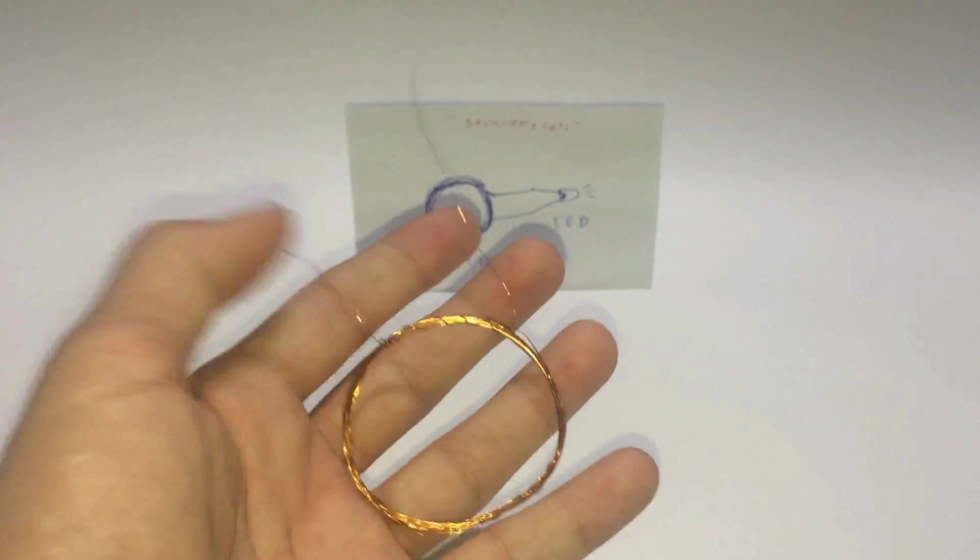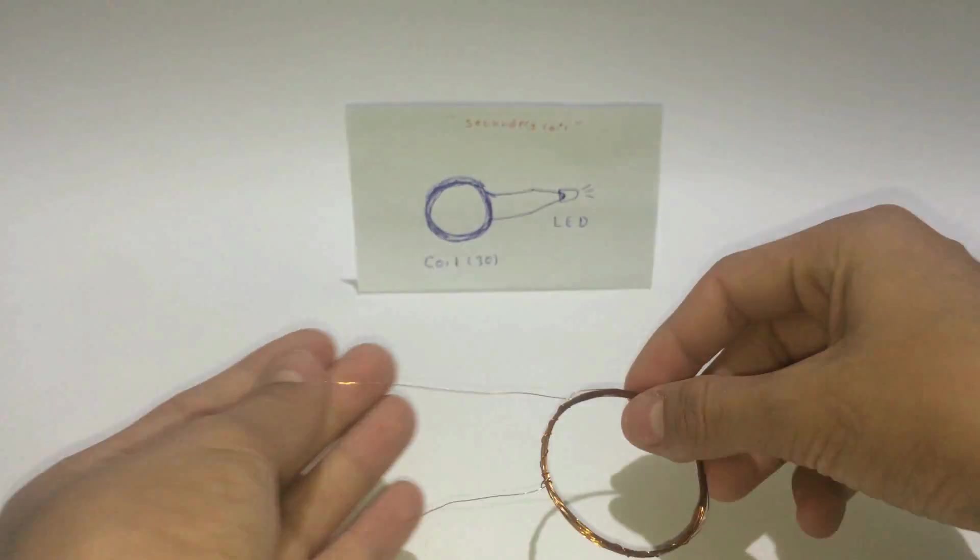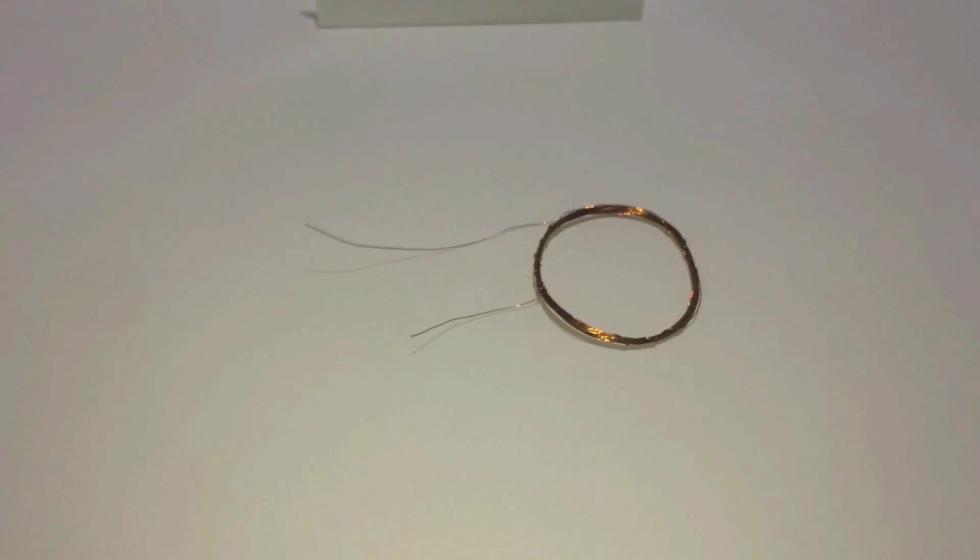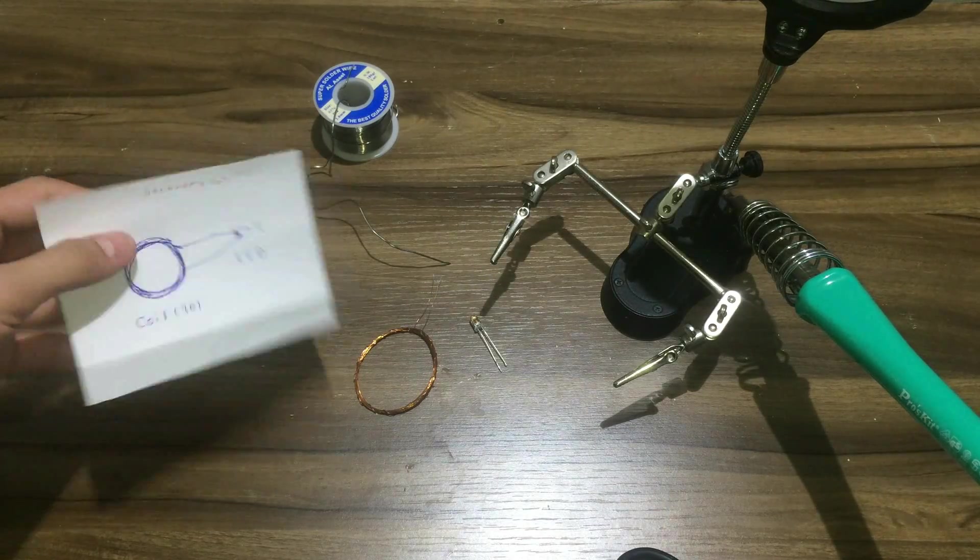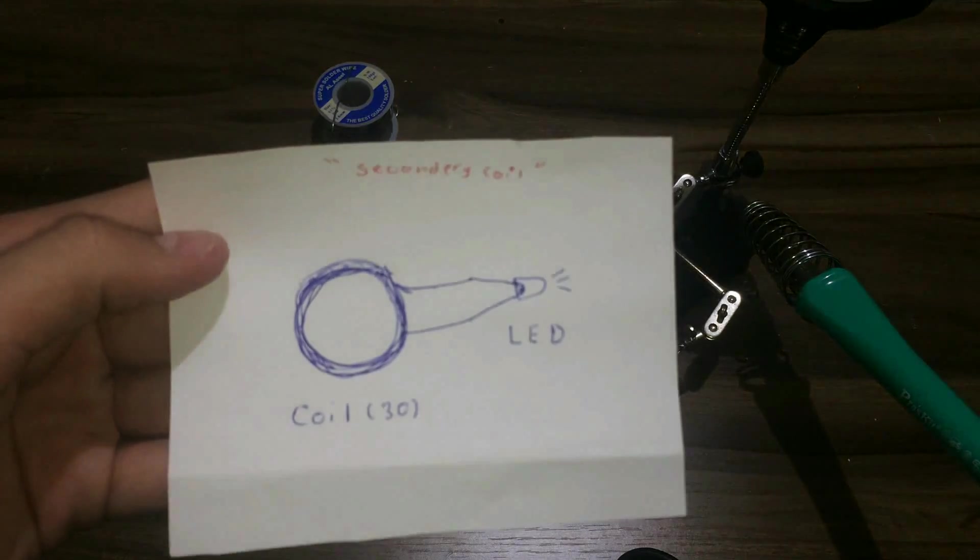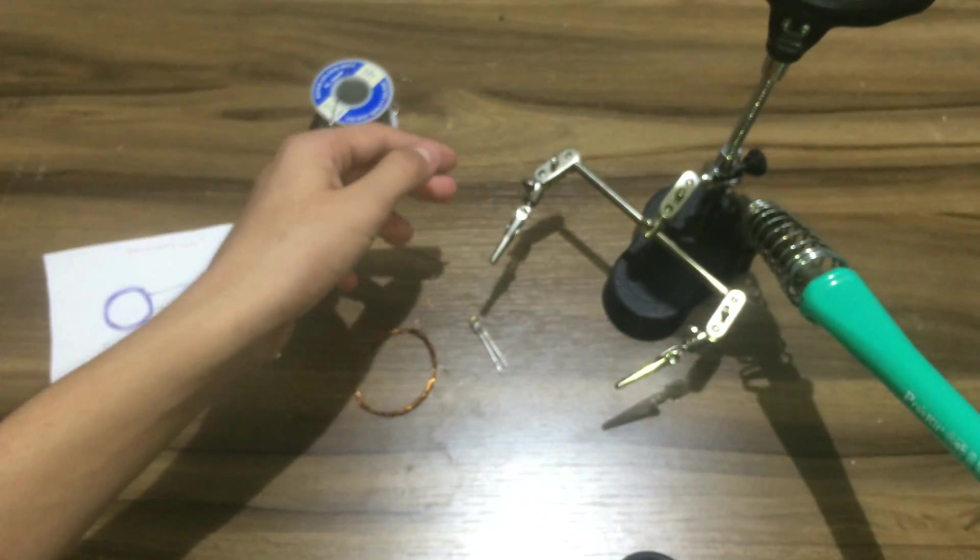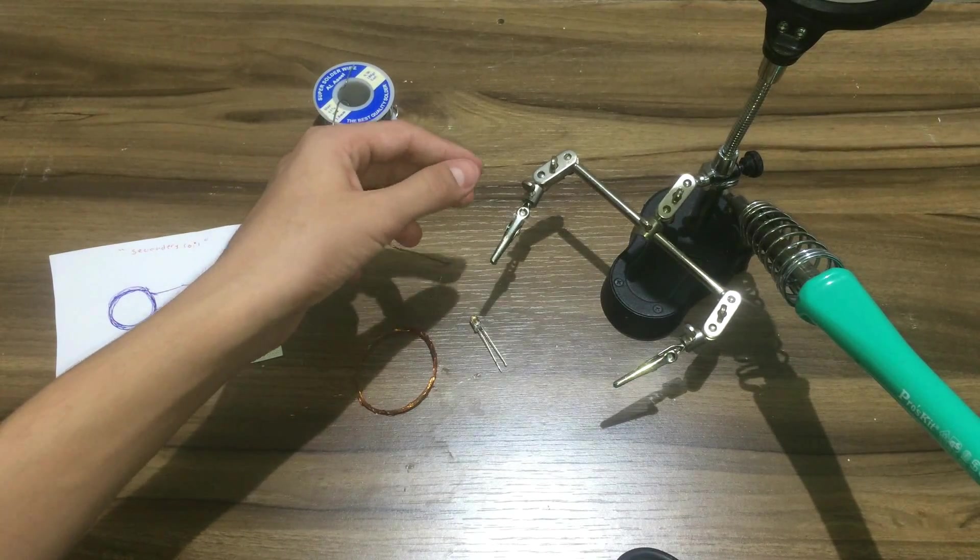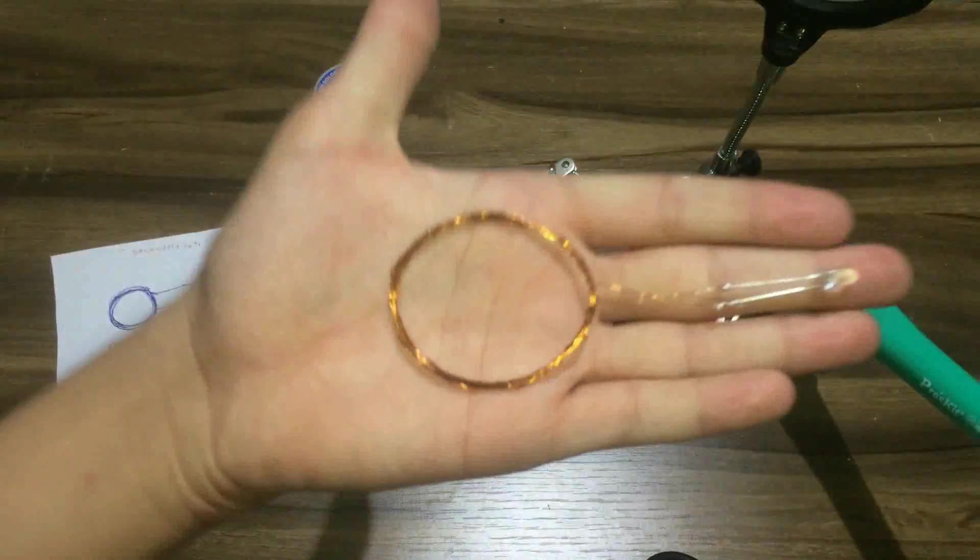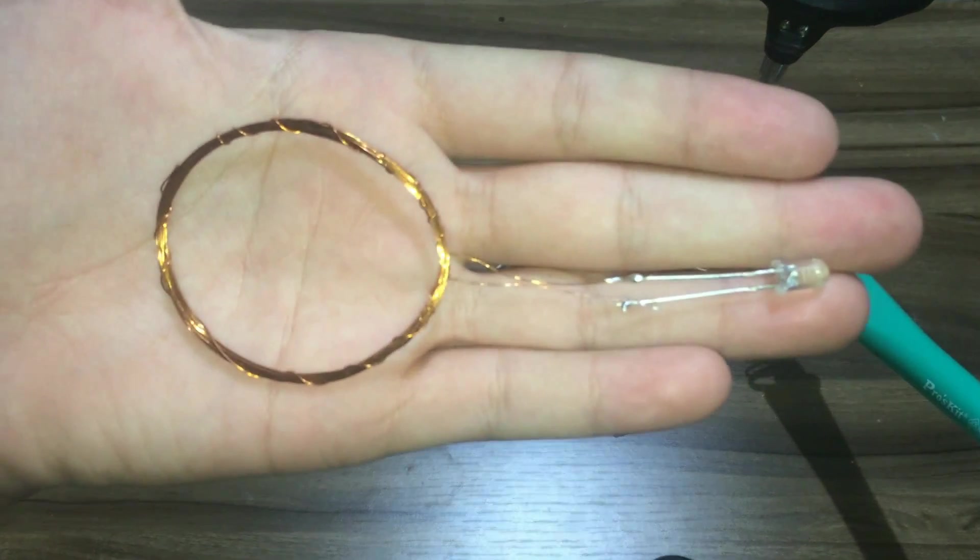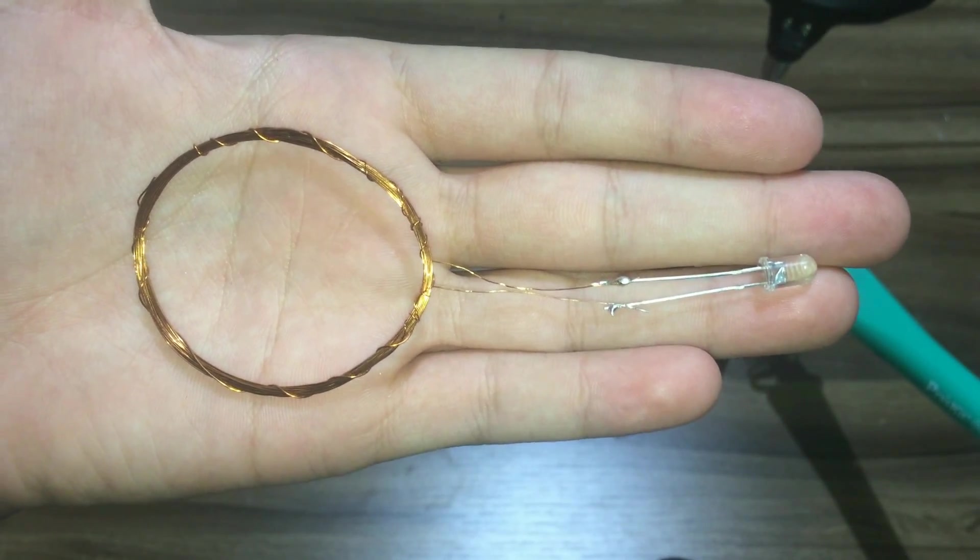Now our coil is finished, as you can see, so the secondary coil is finished. After finishing the coil, all you have to do is add an LED to it like the circuit diagram and simply solder it. As you can see, I soldered the LED to the coil and now our receiver circuit is finished.